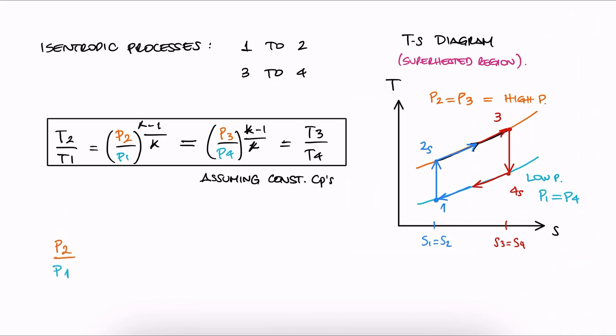If we're considering variable specific heats, meaning trying to use the table for more accurate calculations, we have that this pressure ratio, p2 over p1, is equal to the relative pressure at T2 over the relative pressure at T1, which again can be written in terms of 3 and 4.